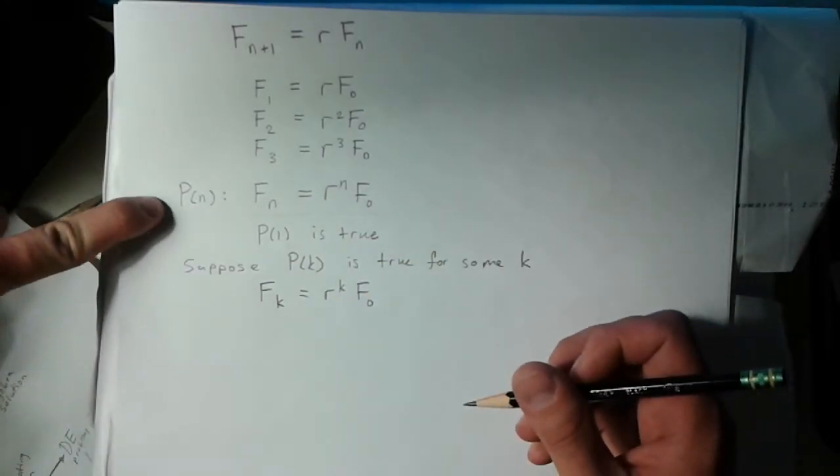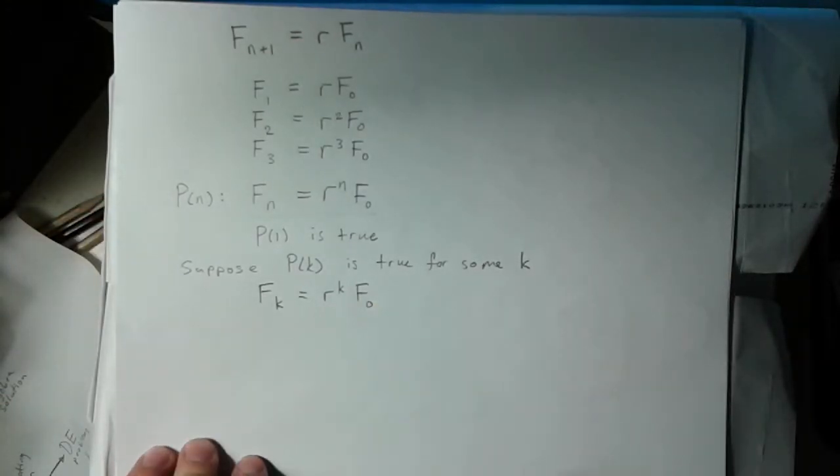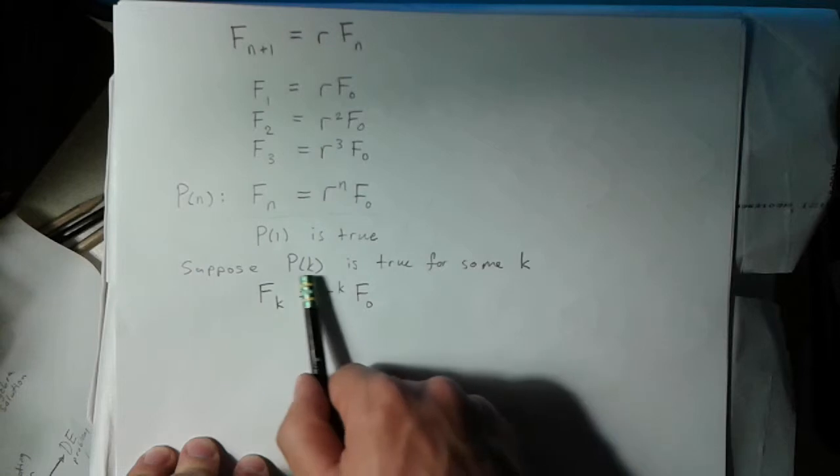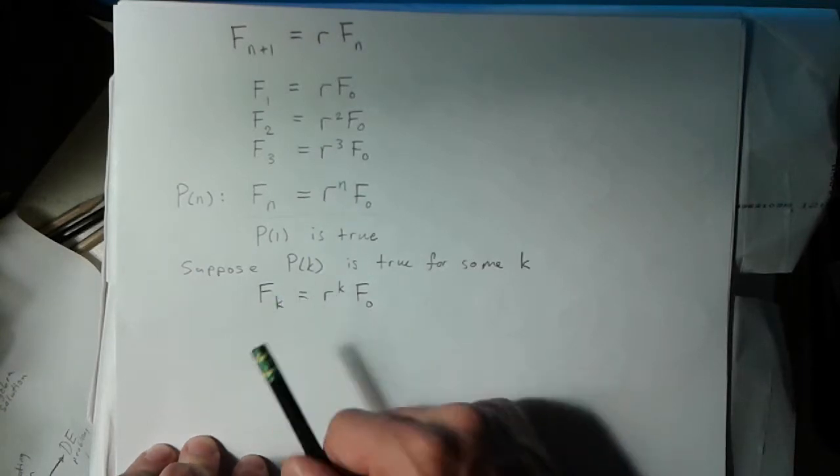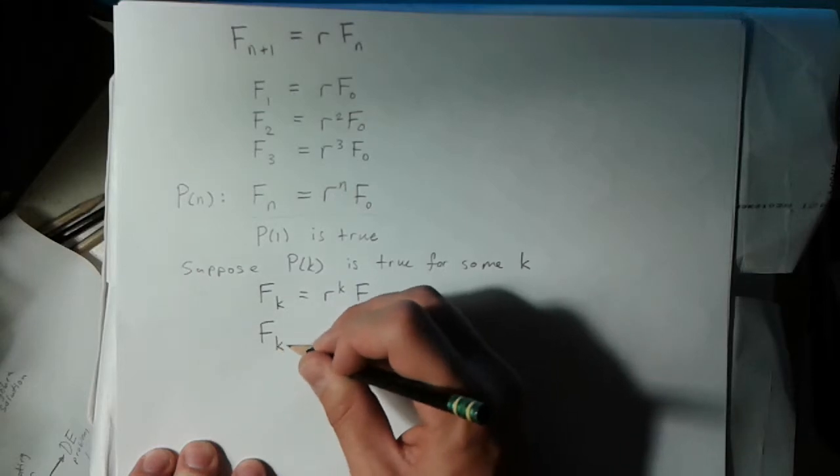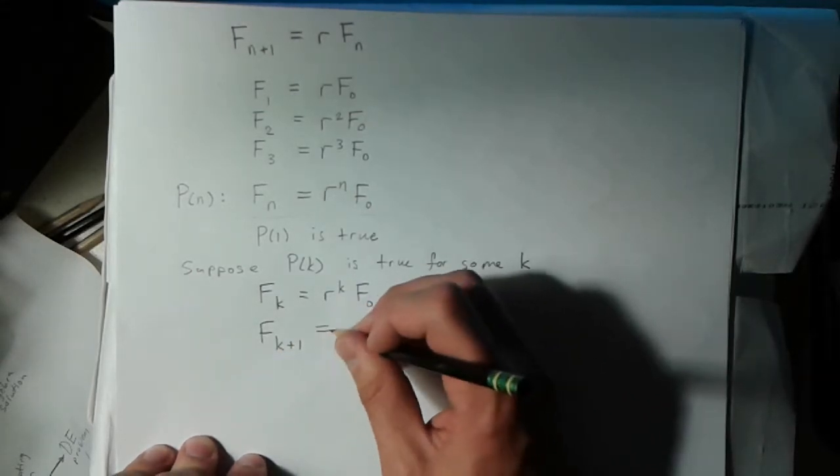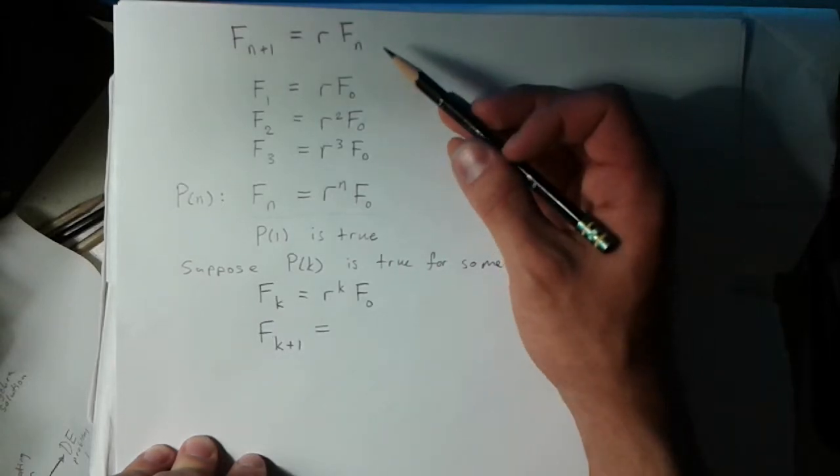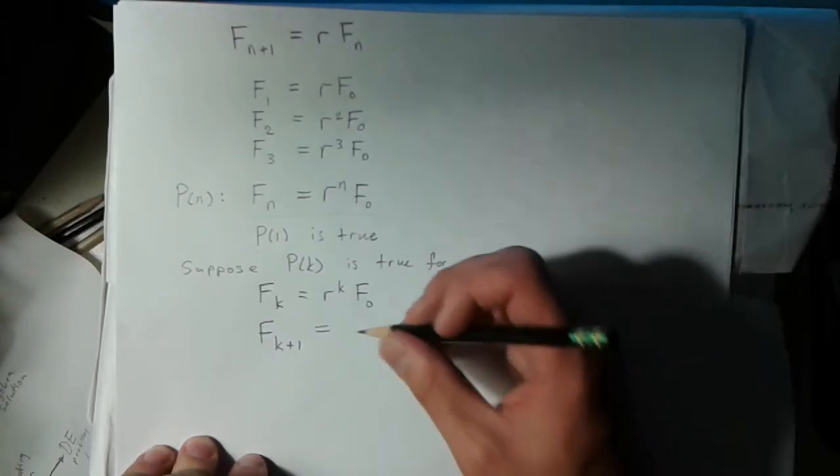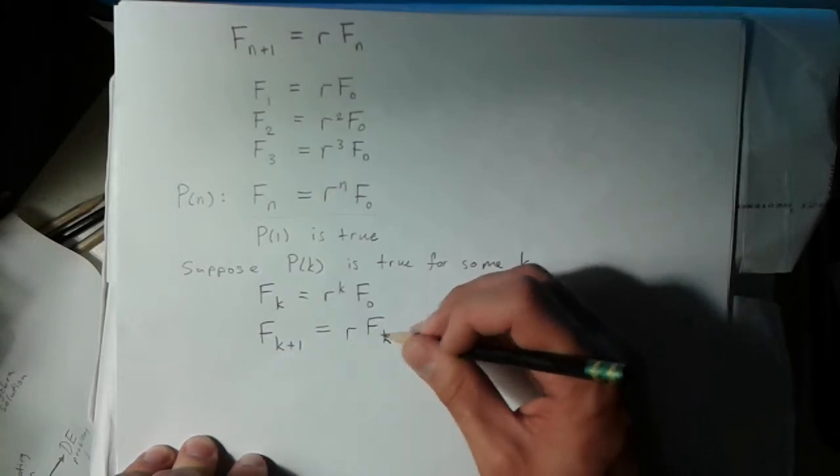Now what we want to do is show that the statement P(k) implies the statement P(k+1). We can look at what the k+1th term of the sequence would be. Using our original definition of the recurrence relation, this would just be r times the kth term.